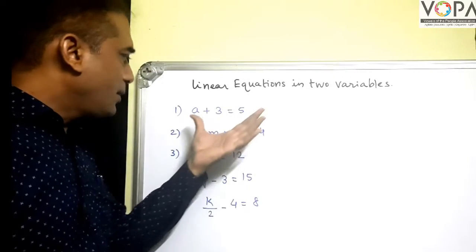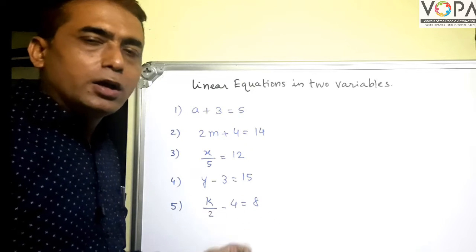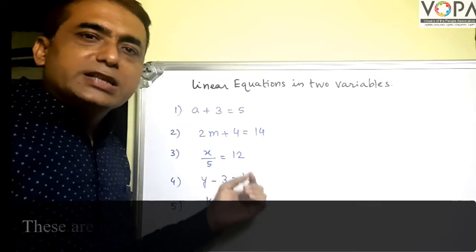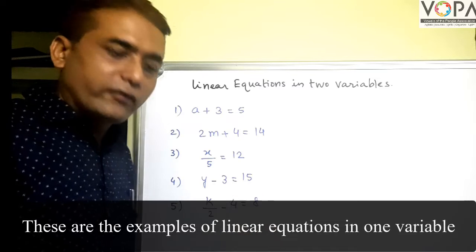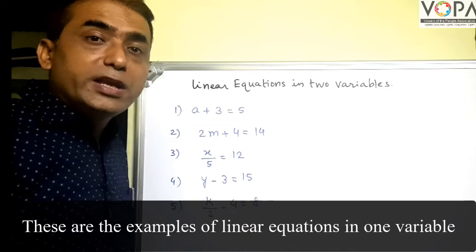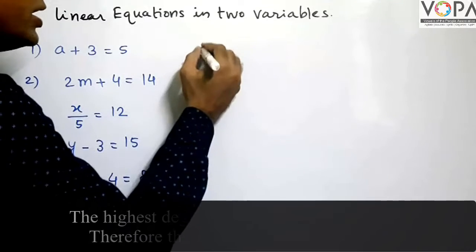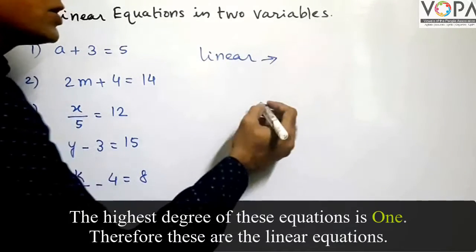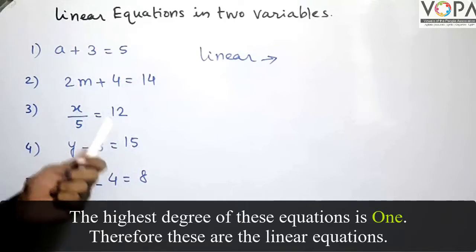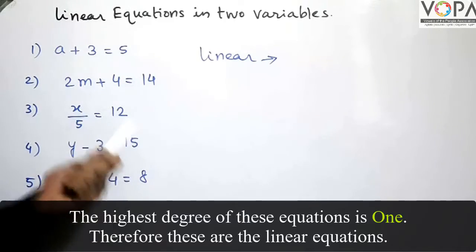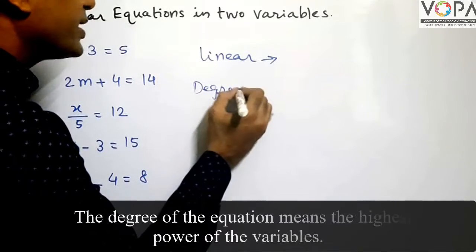Dear students, now you have solved all these equations. These equations are called linear equations in one variable. What is the meaning of linear equations in one variable? Linear equations are called this because in these equations, the highest degree is 1. Degree means highest power.